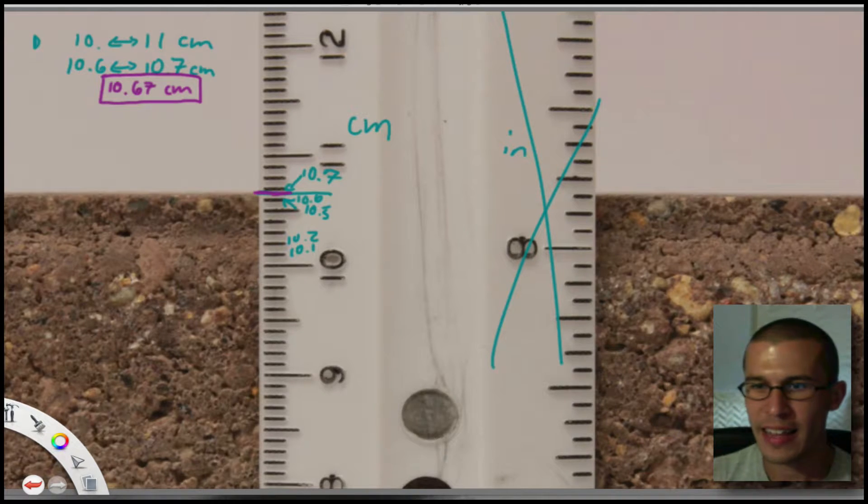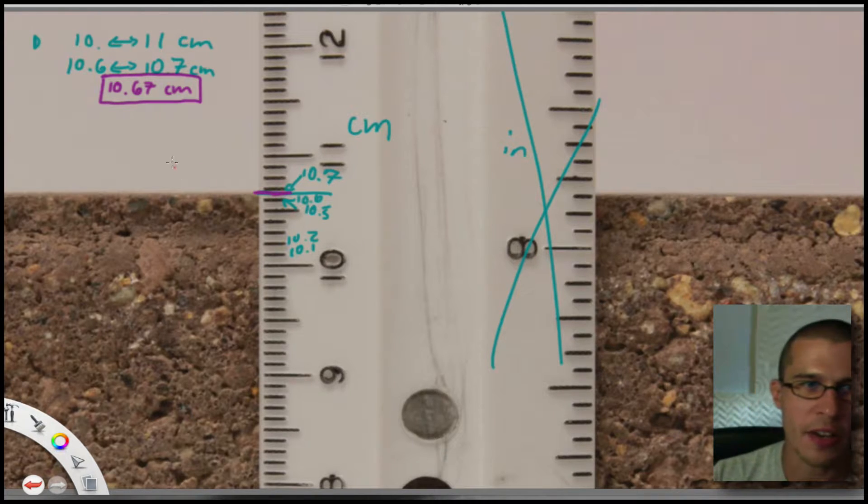What I do is I look at that very last digit that I've just estimated. Notice I didn't say 10.6789521965, I said 10.67 because I estimated that last digit. This is the estimated digit. It's estimated.